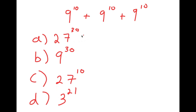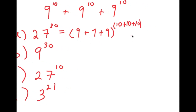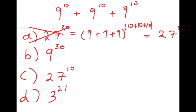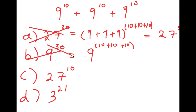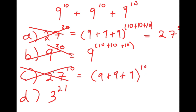Option A is 27 to the power of 30. This likely came from adding all the bases and adding all the exponents: 9 plus 9 plus 9 to the power of 10 plus 10 plus 10, giving 27 to the power of 30. This is wrong — that's not the proper way to add exponents. Option B, 9 to the power of 30, likely came from keeping the base the same and adding the exponents — also wrong. Option C, 27 to the power of 10, came from adding the bases but keeping the exponent the same — also wrong.